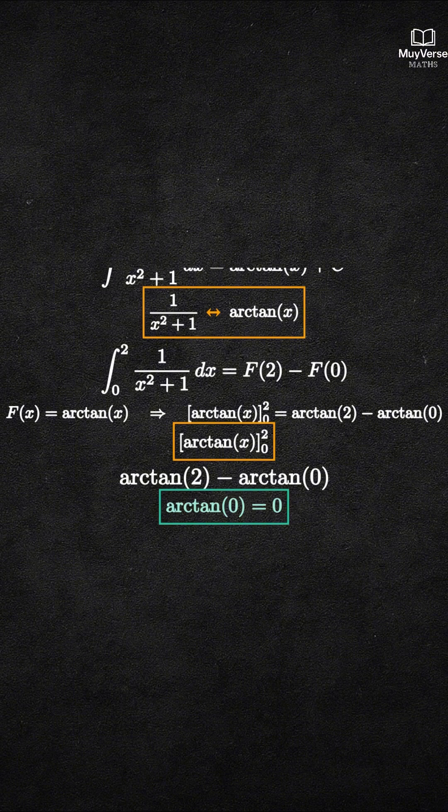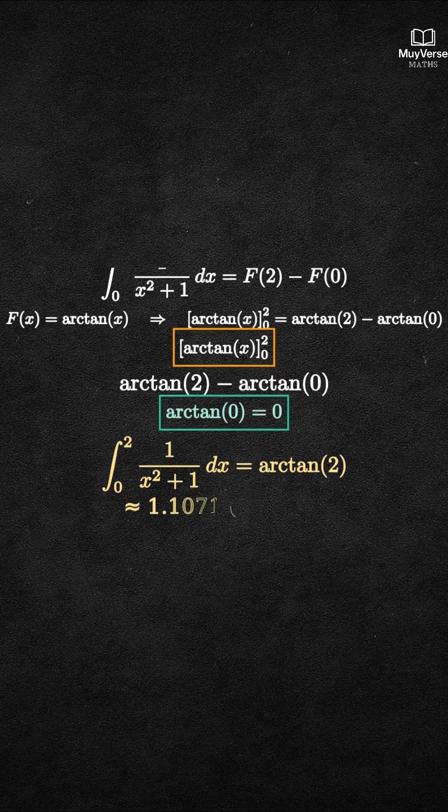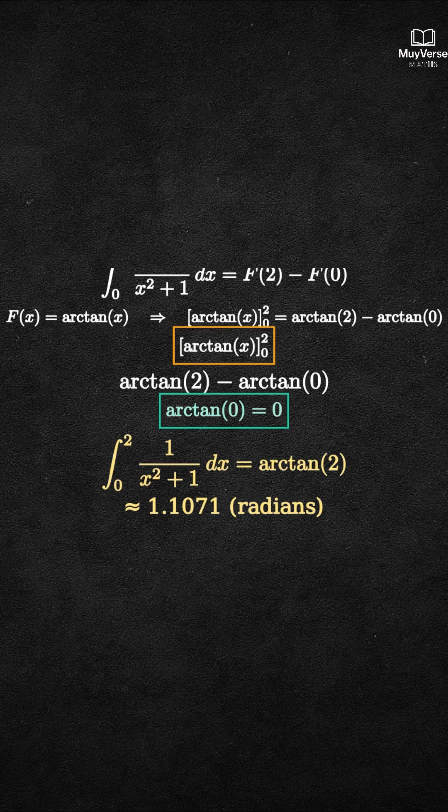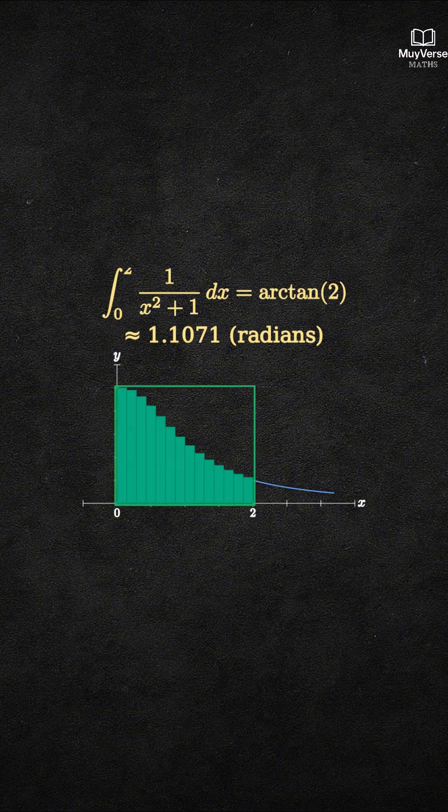Step 4. Final result. The exact value of the integral is arctangent of 2. For a quick approximation in radians, arctangent of 2 is about 1.1071. This numerical value matches the green shaded area from 0 to 2 under the curve.